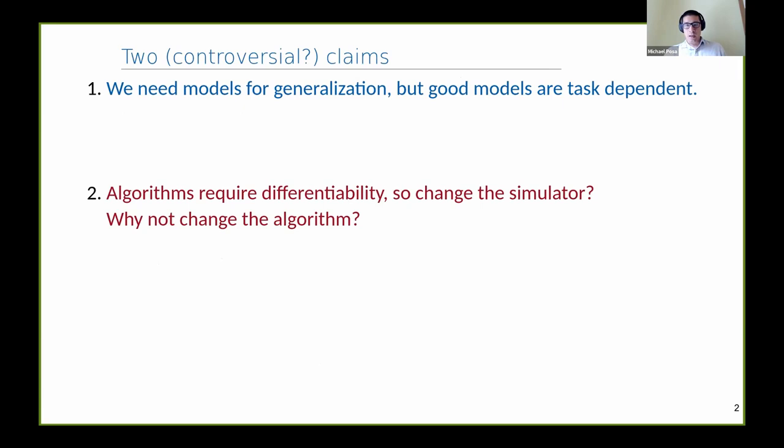The second point: at our core, we understand that most algorithms require differentiability on some level. The standard approach lately has seemed to be to change the simulator. So contact not differentiable, so let's change the simulator and make it differentiable. But I'll argue that we should probably just change the algorithm instead, in a way that doesn't require changing physics.